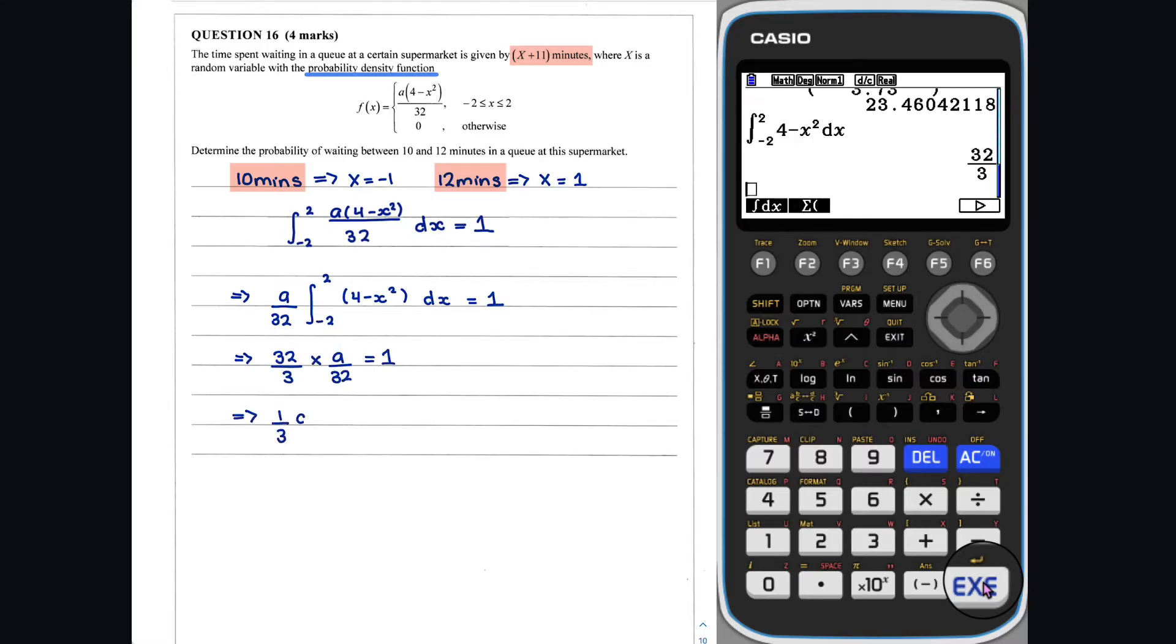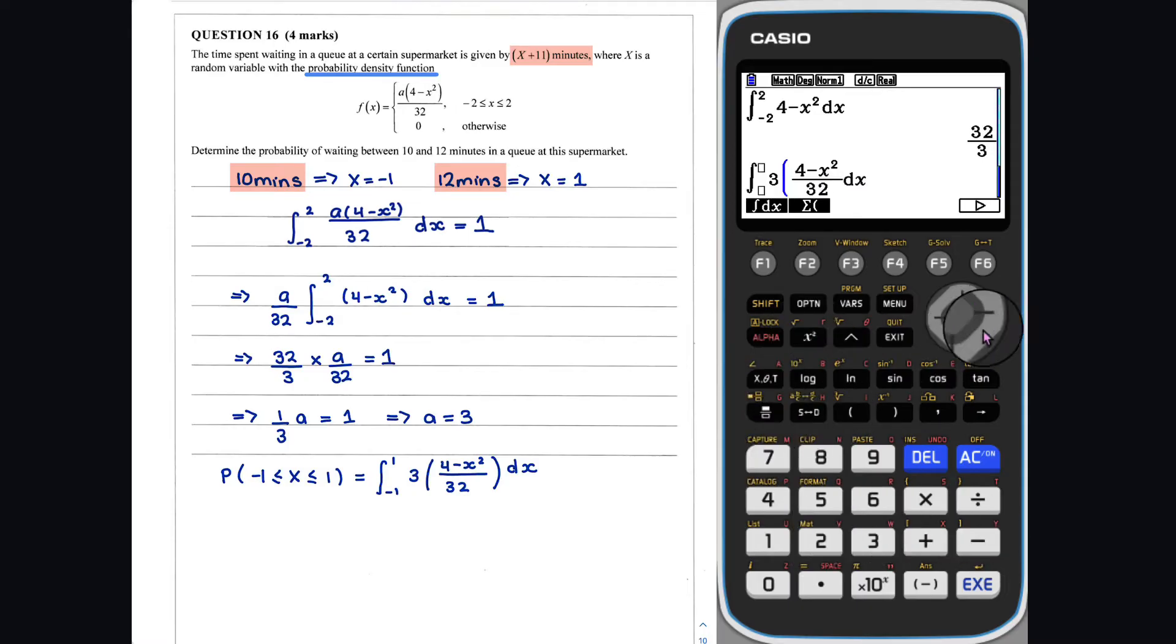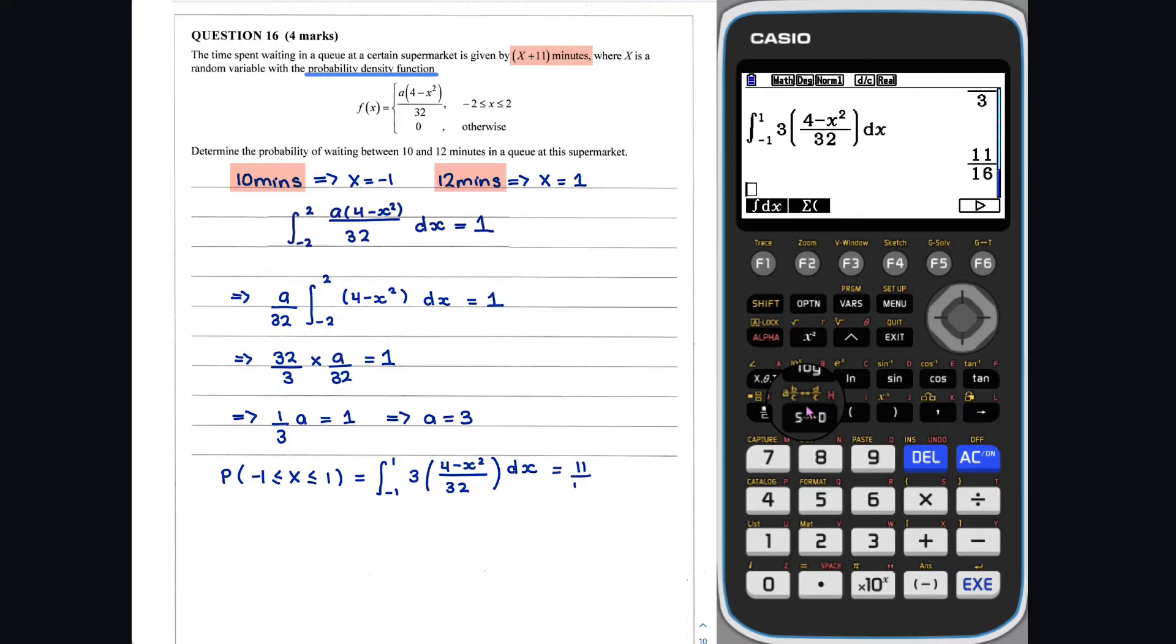So, let's do this. We can now evaluate the required probability as follows. Therefore, the probability of waiting between 10 and 12 minutes is 0.6875.